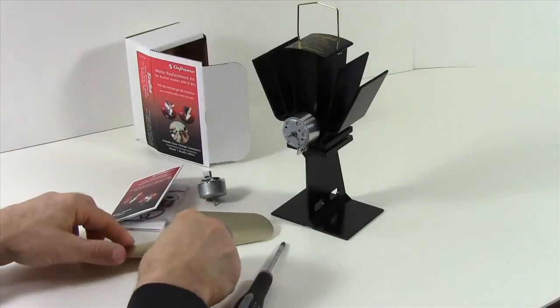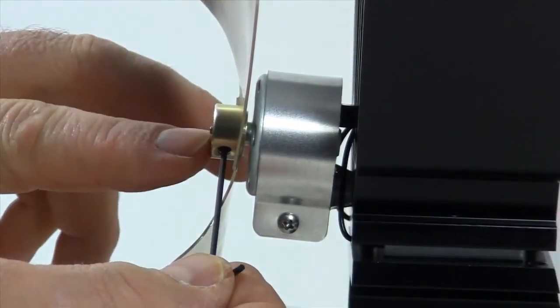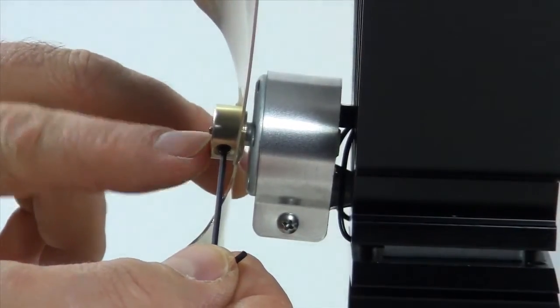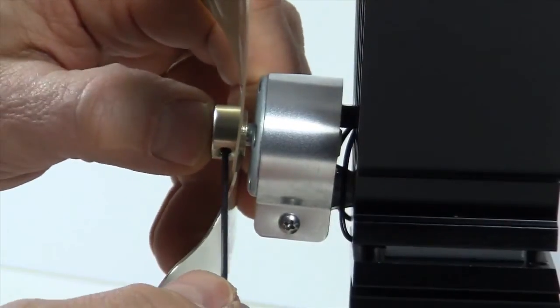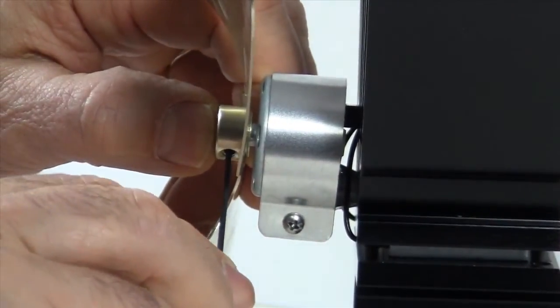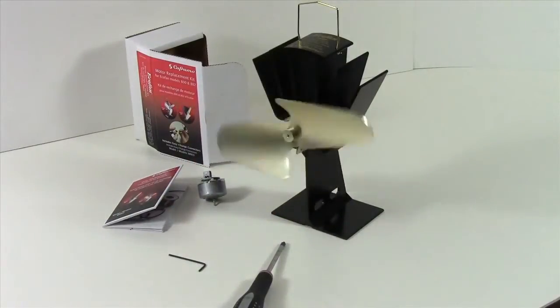And the last step will be to replace the blade. Now we want to make sure that the motor shaft is flush with the front of the blade. Turn the screw clockwise to tighten the blade. And now we have completed our motor replacement.